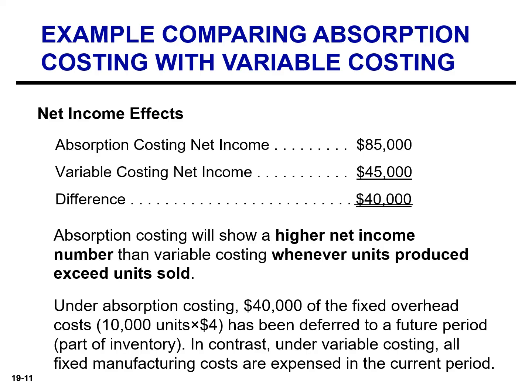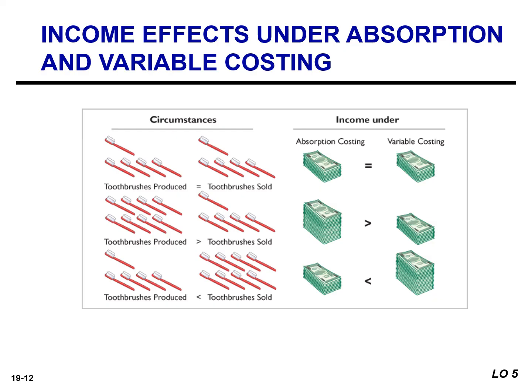In contrast, under variable costing, all fixed manufacturing costs are expensed in the current period. When units produced and units sold are the same, net income will be equal under the two costing approaches — there is no increase in ending inventory, so fixed overhead costs are not deferred. When units produced exceed units sold, income under absorption costing is higher. When units produced are less than units sold, income under absorption costing is lower.